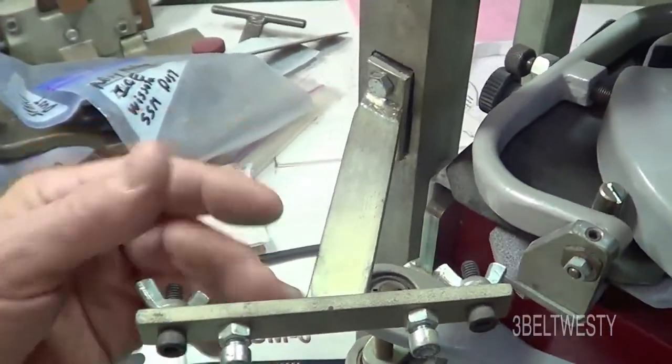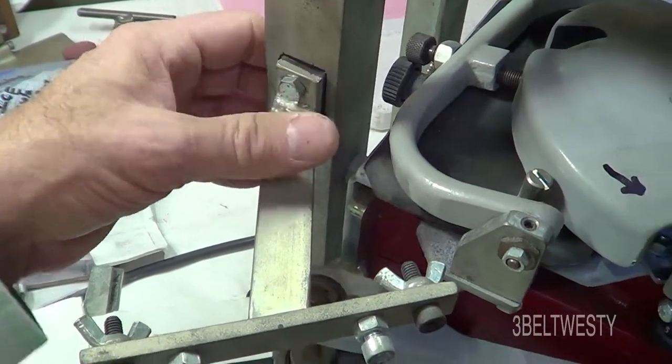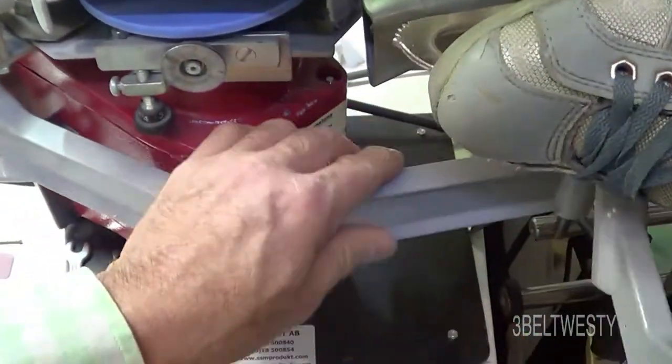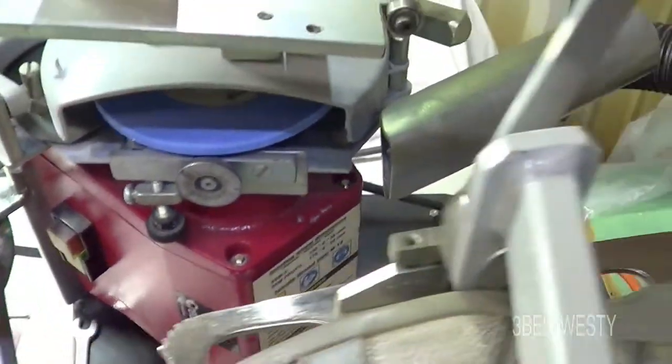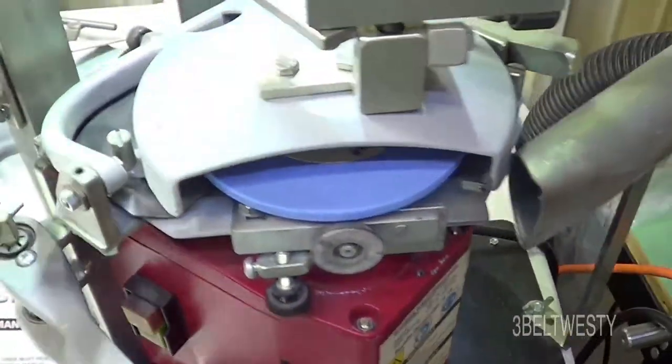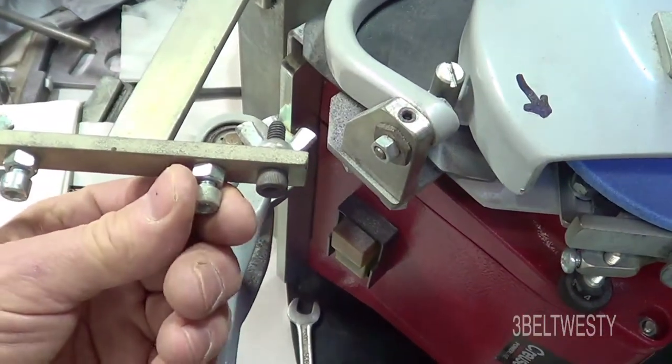But if you take this piece off with the 10mm bolts, 10mm hex, you can go through and have a little bit more room toward the end of the disc not to file the skate onto this.